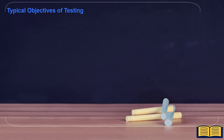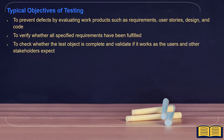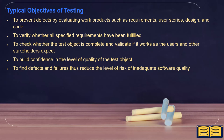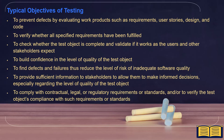In typical objectives of testing, we covered seven objectives: to prevent defects by evaluating work products such as requirements, user stories, design, and code; to verify whether all specified requirements have been fulfilled; to check whether the test object is complete and validate if it works as users and stakeholders expect; to build confidence in the level of quality of the test object; to find defects and failures, thus reduce the level of risk of inadequate software quality; to provide sufficient information to stakeholders to allow informed decisions regarding the level of quality of the test object; and to comply with contractual, legal, or regulatory requirements or standards, and to verify the test object's compliance with such requirements.